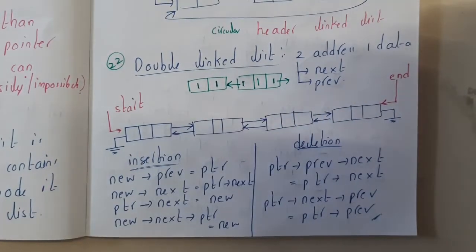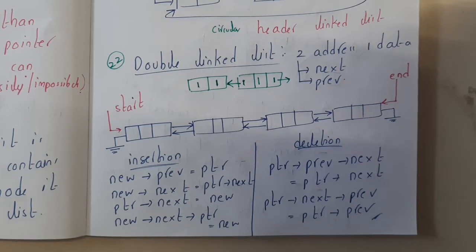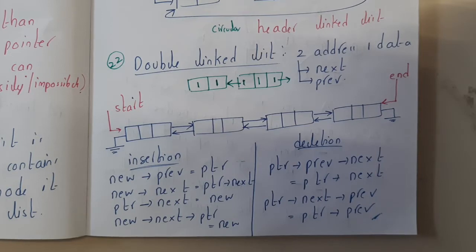It's quite simple. Any operation which we can do on normal linked list can also be done on doubly linked list.